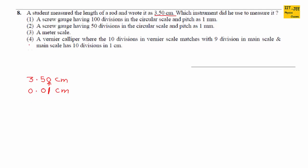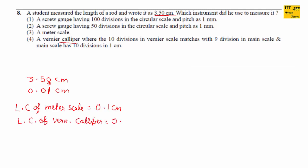Four choices are given and we need to find which instrument has a least count of 0.01 centimeter. Rather than checking each option one by one, we can use a reference: the least count of a ruler is 0.1 cm, the least count of a vernier caliper is 0.01 cm, and the least count of a screw gauge is 0.001 cm. Based on this, the answer should be the vernier caliper.